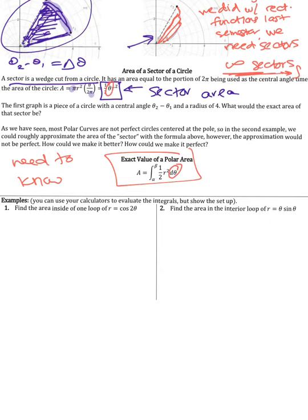That's really what this entire lesson is about: how do I use this polar area integral to evaluate the exact polar area? One thing to note up front is that polar graphs have a lot of symmetry, and symmetry is your friend. Symmetry means you might not have to integrate such a large region, because you could multiply one petal by however many petals you want. The hardest part in these problems is figuring out the bounds. You'll use your calculator to evaluate the integrals, but you'll show the work for setting up the integrals and finding the bounds.